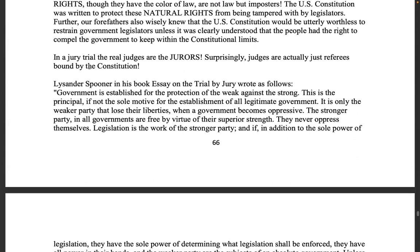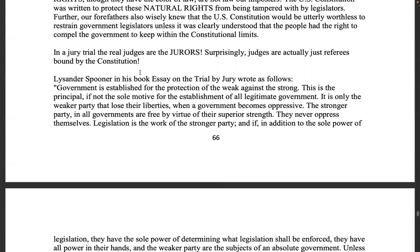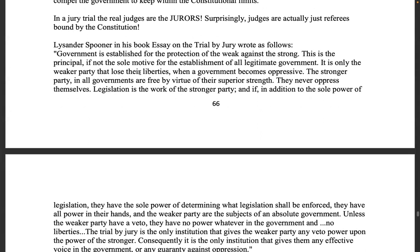In a jury trial, the real judges are the jurors — judges are actually just referees bound by the Constitution. This whole farce where they can make judicial fiat and rule contrary to what we've established is also void from enactment. There's already jurisprudence that says courts and judges have no right to do that, but because we're ignorant and these Jesuits don't care about the truth it gets trampled on. When the original Supreme Court ruled Roe v. Wade and allowed abortion, that should have been void from enactment because it's contrary to the right to life.